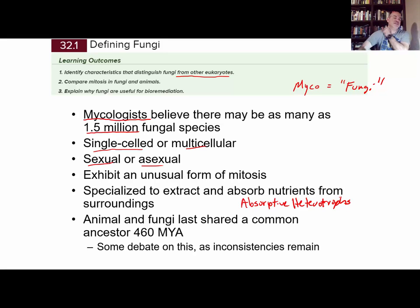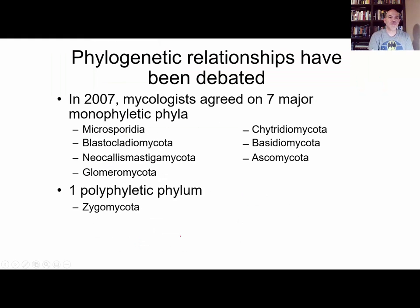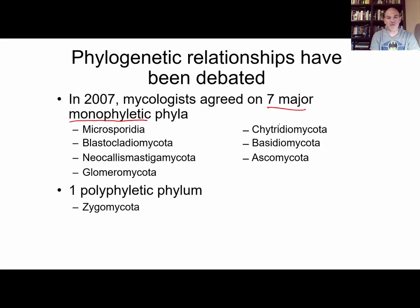Absorptive heterotrophs release enzymes into their environment. Fungi and animals share a common ancestor around 460 million years ago. In the laboratory, we studied four different phyla, but around 2007 mycologists came to believe, based on studying characteristics of these fungi, that there are seven major monophyletic phyla — meaning within any one phylum, the group shares a common ancestor if you go back in time.